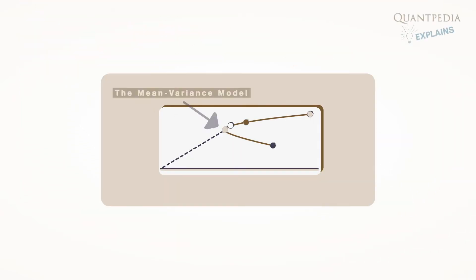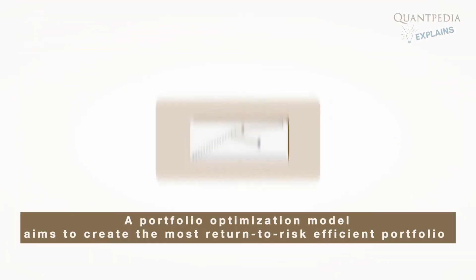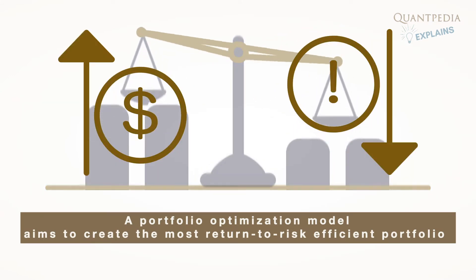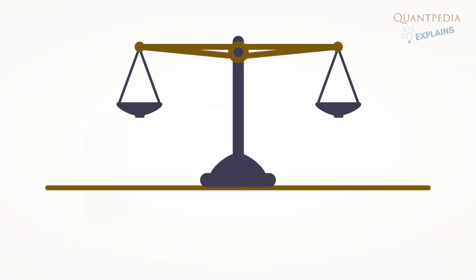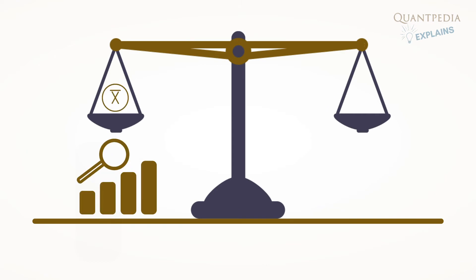Markowitz model is also known as the Mean Variance Model. A portfolio optimization model aims to create the most return-to-risk efficient portfolio based on expected returns, mean, and standard deviations, variance, of returns.